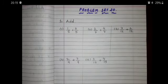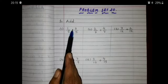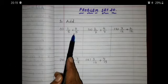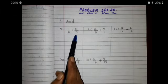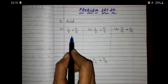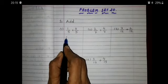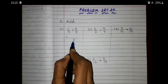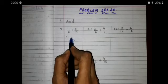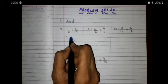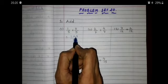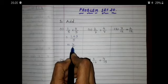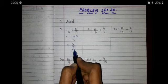Problem Set 20, Question number 1. First one: 1 upon 5 plus 3 upon 5. Both fractions have the same denominator, so for addition, first we write the common denominator of both fractions, that is 5. Now, add both the numerators: 1 plus 3 is equal to 4. So, 4 upon 5 is the answer.